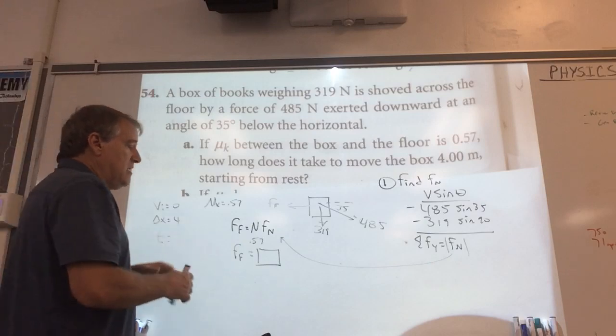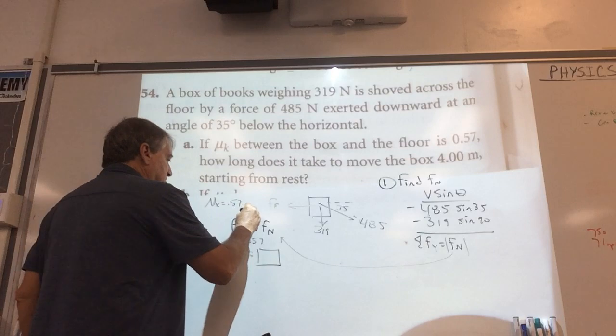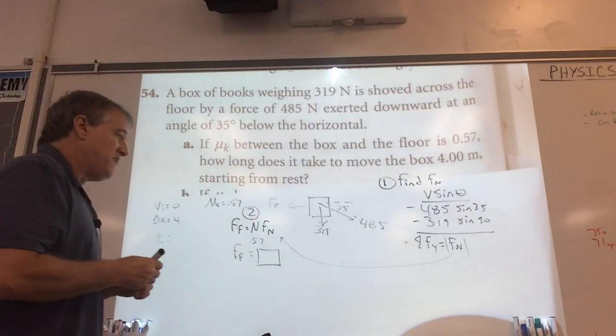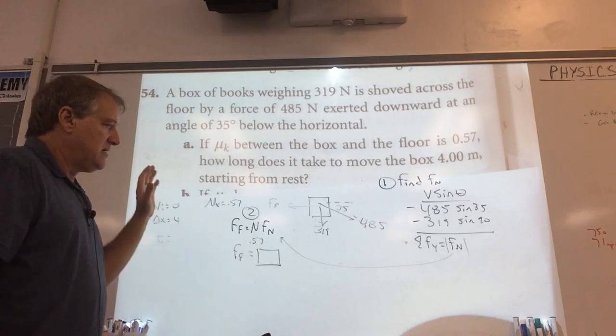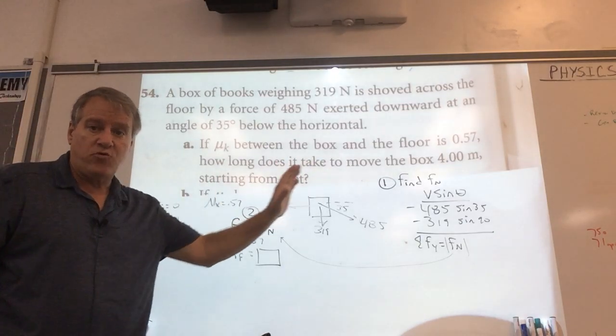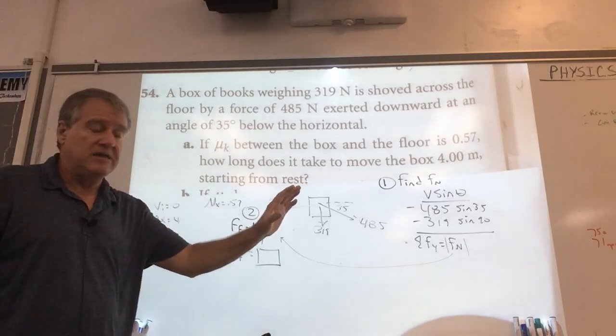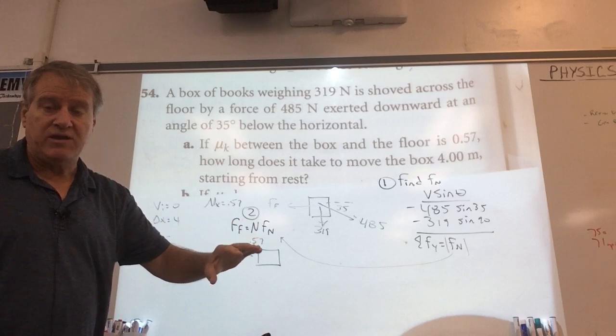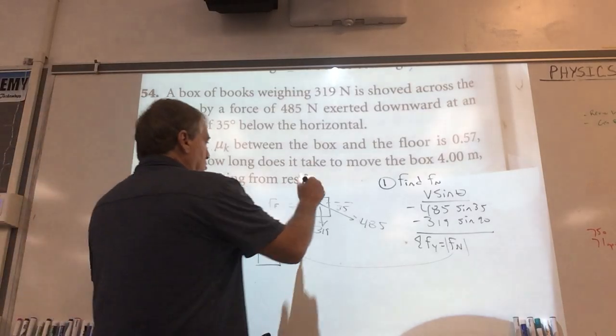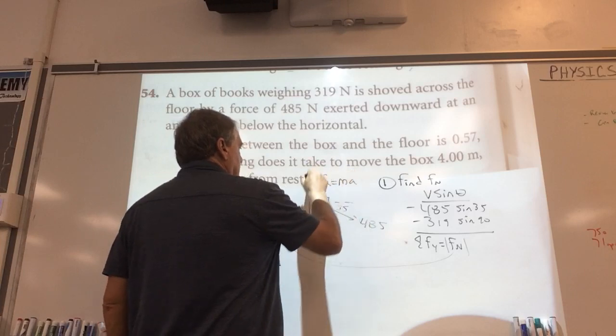Once I know that, then now I know all the forces I need to know. So this, I guess, is step two over here to solve for the second to the last part. And that is what happens to the sum of the forces in the x direction? Because that's the direction the box is moving in is horizontally. So I know the sum of the forces in the x direction is equal to ma. And that's really what's driving all of the work that we're doing here.